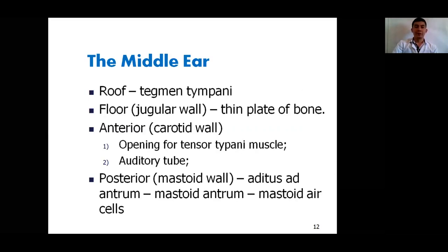The middle ear has six walls: roof, floor, anterior, posterior, medial, and lateral. The roof is represented by the tegmen tympani, the superior border that separates the middle ear from the middle cranial fossa. The floor, also known as the jugular wall, is a thin plate of bone that separates the middle ear from the jugular vein inferiorly — sometimes this thin plate of bone may be replaced by fibrous tissue. The anterior or carotid wall is characterized by two openings: a superior narrow opening for the tensor tympani muscle, and an inferior larger opening for the auditory tube.